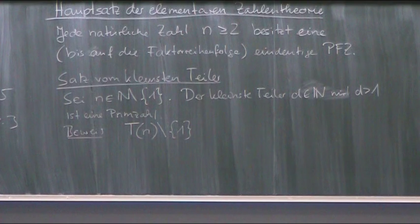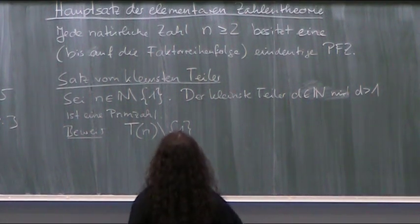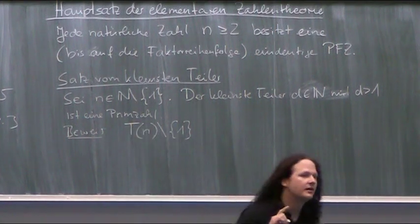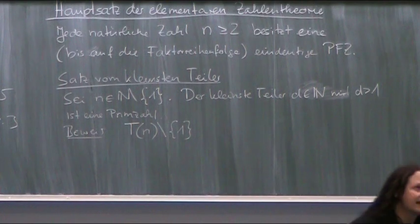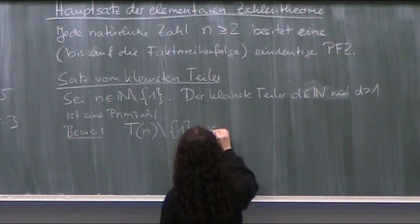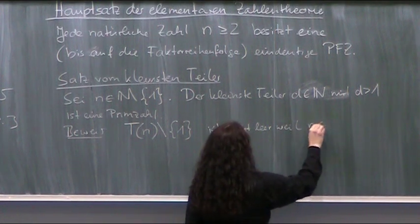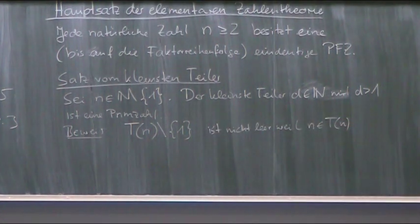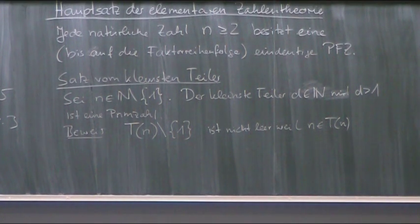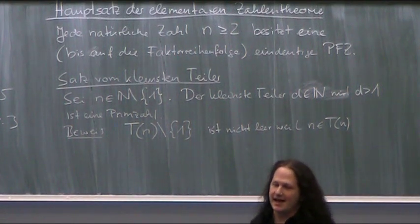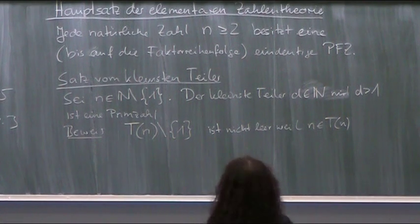Ist denn die Menge T(n) ohne die 1 leer? Nein – weil n selbst auf jeden Fall Element von T(n) ist. Also habe ich zumindest eine nicht leere Teilmenge der natürlichen Zahlen. Jetzt müssen wir sicherstellen, dass es darin auch ein kleinstes Element gibt in dieser Menge T(n) ohne 1.